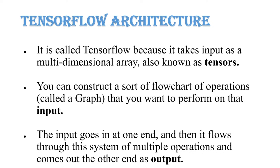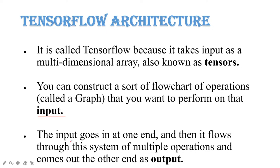TensorFlow architecture works by a sort of flow chart operation. We first build the input neurons, hidden neurons, and output neurons, and pass the input. We build the flow of your algorithm, then give the input data. Input goes from one end to another — from input layer to output layer, with hidden layers in between. After reaching the other end, that is called your output. This is the TensorFlow architecture.